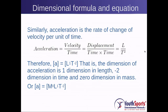Now we take an example of acceleration. Acceleration is the change in velocity over time, and change in velocity is the change in displacement over time, so it becomes displacement over time squared. Therefore, acceleration has dimensions of L to the first power and T to the minus two power — one dimension in length, minus two dimensions in time, and zero dimensions in mass: M to the zero, L to the one, T to the minus two.